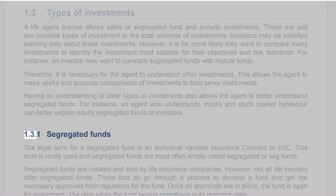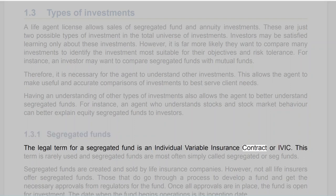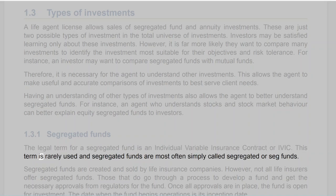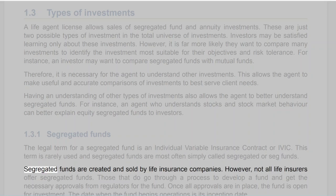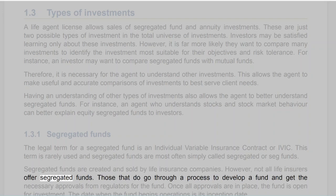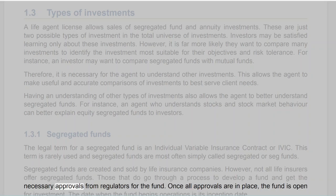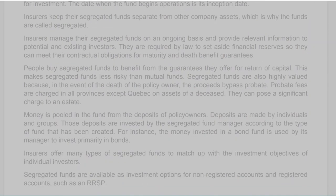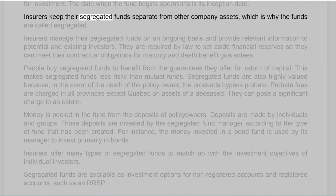Section 1.3.1: Segregated Funds. The legal term for a segregated fund is an Individual Variable Insurance Contract (IVIC), though they are most often simply called segregated or seg funds. Segregated funds are created and sold by life insurance companies; not all life insurers offer segregated funds. Those that do go through a process to develop a fund and get regulatory approvals. Insurers keep their segregated funds separate from other company assets — which is why the funds are called segregated.